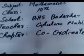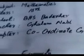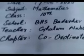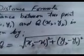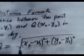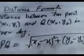We are dealing with coordinate geometry. If you have any coordinates, we can find the distance using the distance formula: square root of (x2 minus x1) whole square plus (y2 minus y1) whole square. Here x1, x2 and y1, y2 are the coordinates of the two points.